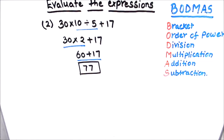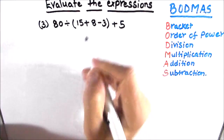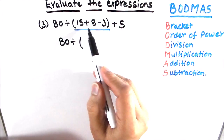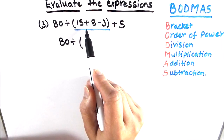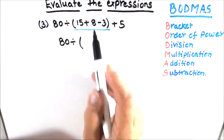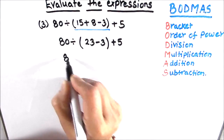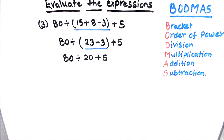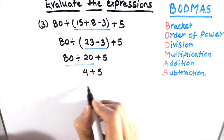Now let's solve an expression with more than four operations. According to BODMAS we first solve the parentheses or brackets. Inside the parenthesis we have addition and subtraction together. For this type of expression we go from left to right — the operation on the left is solved first. So 15 plus 8 is 23, then 23 minus 3 is 20. Now we have 80 divided by 20 plus 5. Division first: 80 divided by 20 is 4. Then 4 plus 5 is 9. Our final answer is 9.